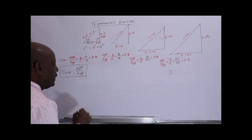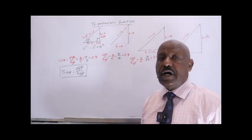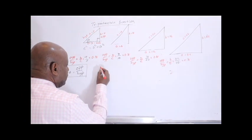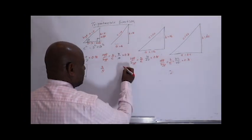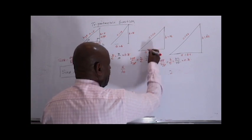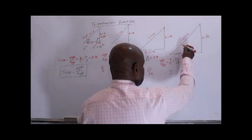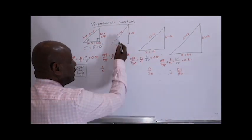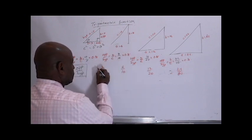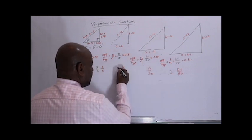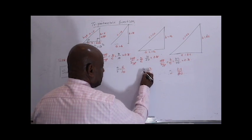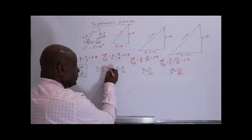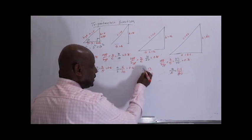This is one function called sine function, which is opposite over hypotenuse. For example: 3 divided by 5, 6 divided by 10, 12 divided by 20, 24 divided by 40. When you divide 3 by 5 you get 0.6. 6 divided by 10 is also 0.6. So the ratio is always 0.6 — this is opposite over hypotenuse, which is A divided by C.